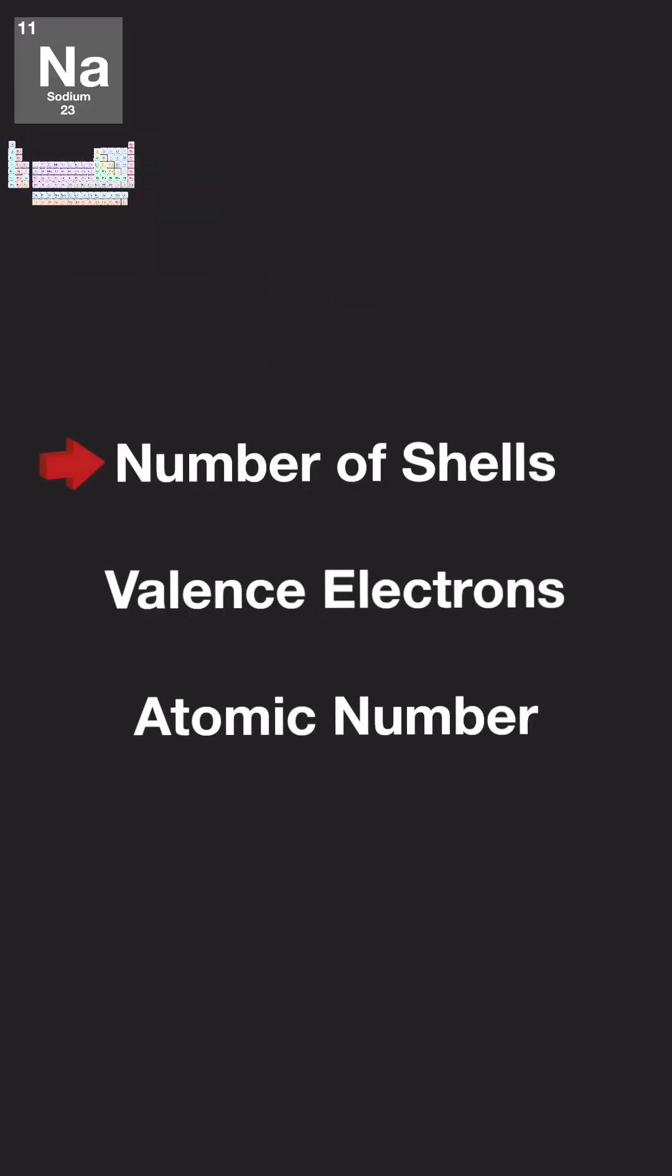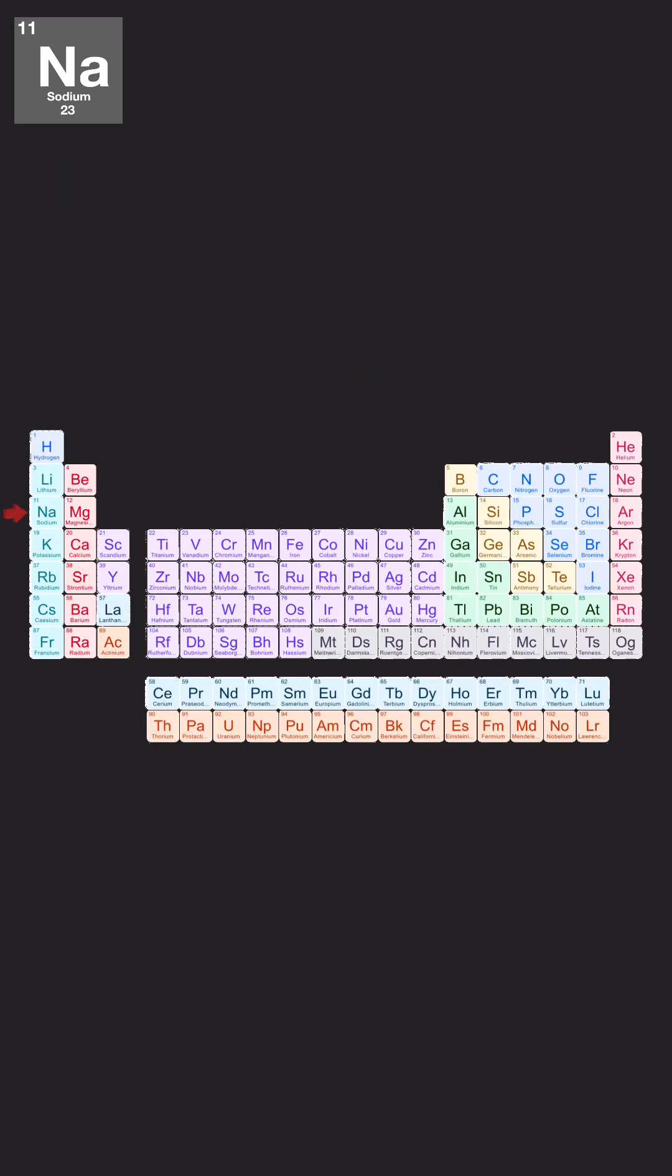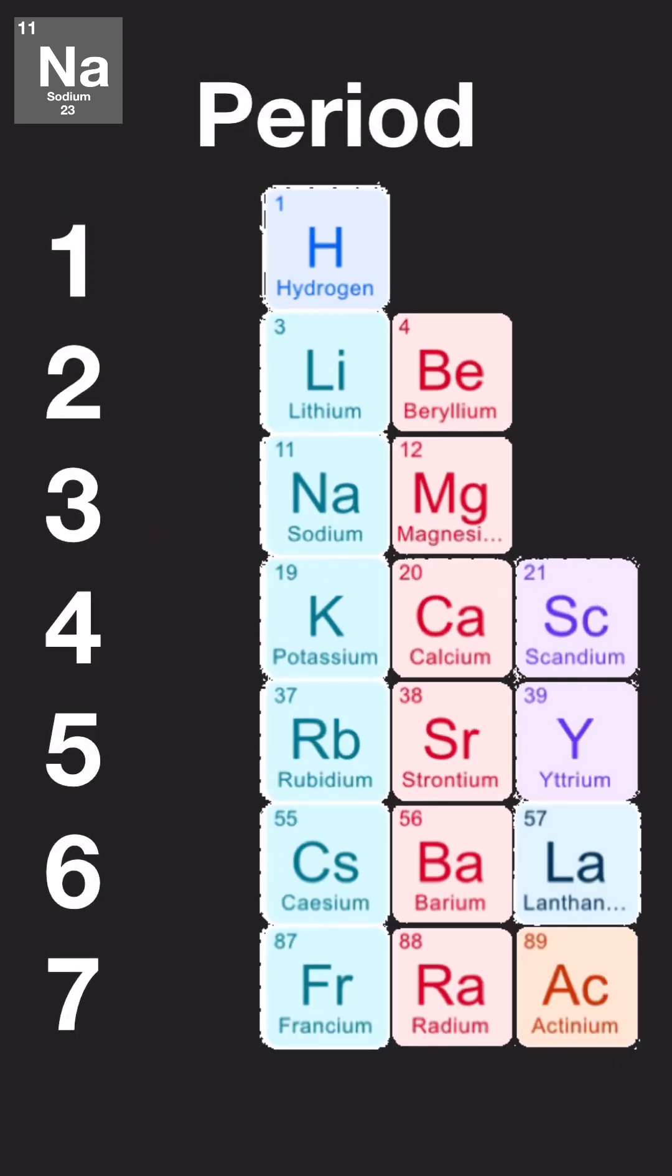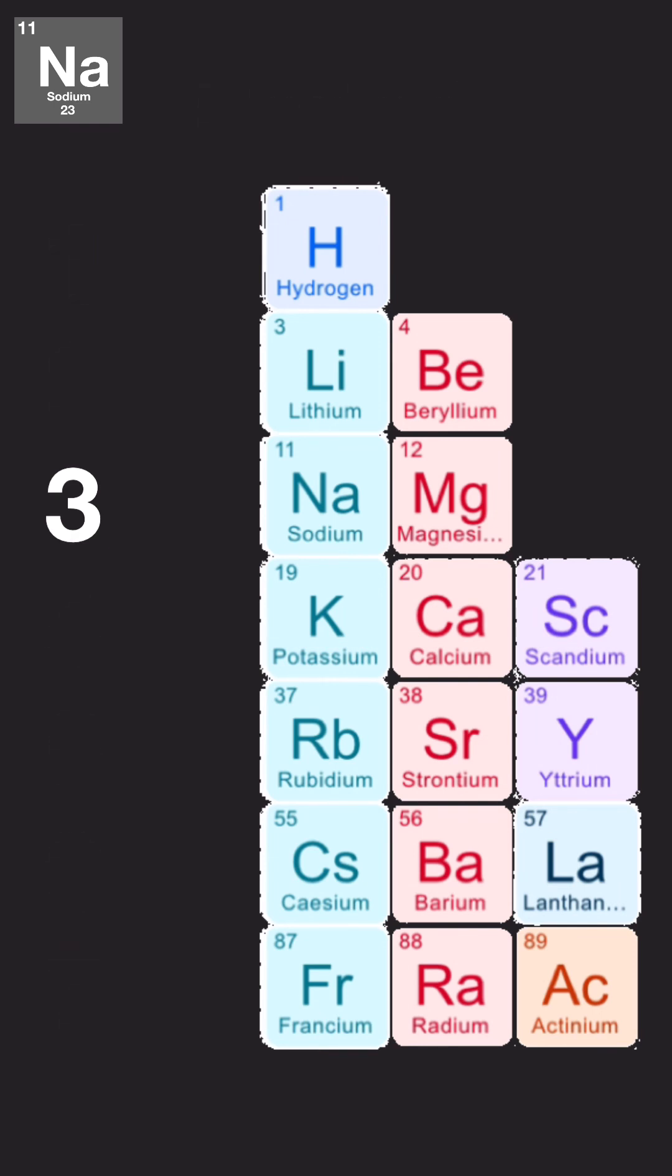we need to find the number of shells that surround the atom. Locate the element you're trying to draw. Then, find the period or row number. In this case, it's three. This means there are three shells.